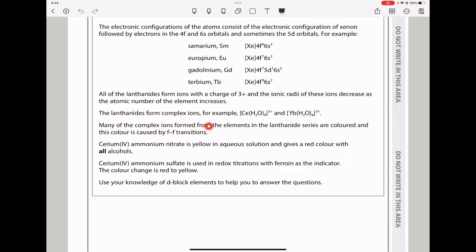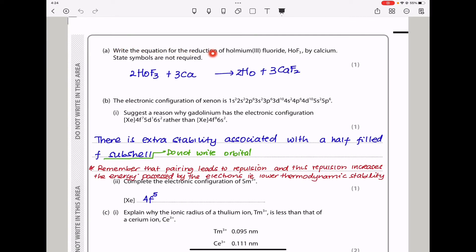Down here they say write the equation for the reduction of holmium-3-fluoride HoF3 by calcium. State symbols are not required. Because we know this is written like that it means this is 3+. And therefore calcium is going to displace to form calcium fluoride and we are going to form Ho. I had to balance the equation by multiplying by 2 here, 3 here, 2 here and 3 here. The reason for multiplying by 3 here because F was 2 here so we have to make them 6 because this was 3 as well.